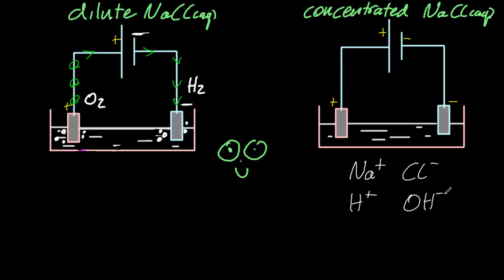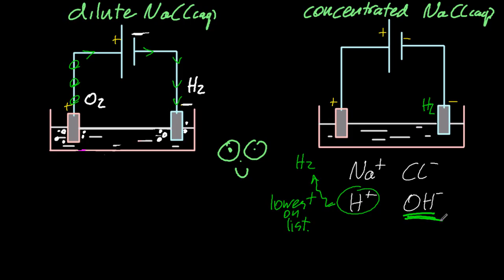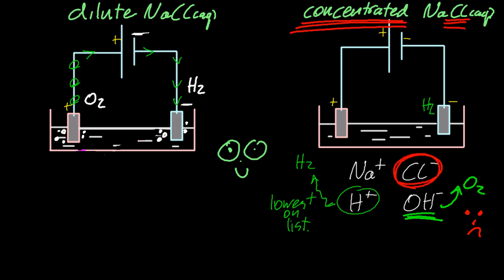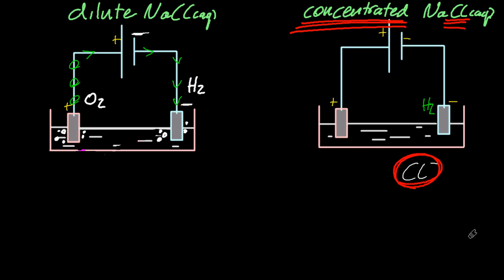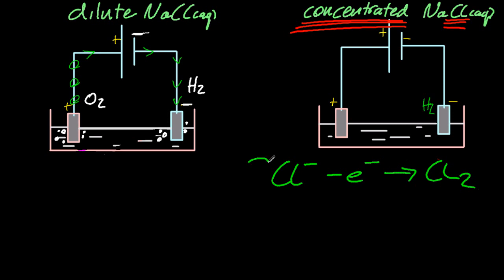Concentrated sodium chloride. Once again, write out the ions. H⁺ is still lowest on the list, so hydrogen is produced at the negative electrode. But at the positive electrode, if it's concentrated, the more concentrated ion is discharged. That means chloride is attracted to the positive electrode, has an electron ripped off, and makes chlorine gas. So what do you see? Green bubbles.